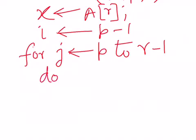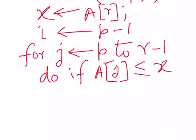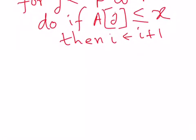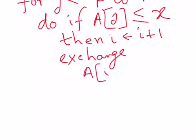In the for loop, if the current element a[j] is less than or equal to x (the pivot), we simply increment i to i plus one. This means the current element is already in the correct part — the left part of the array. Otherwise, if a[j] is greater than x, it is greater than the pivot element and should be pushed to the right side of the array, so there is an exchange of a[i] with a[j].